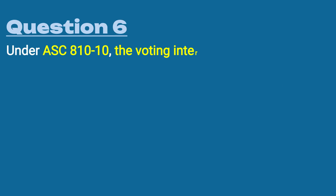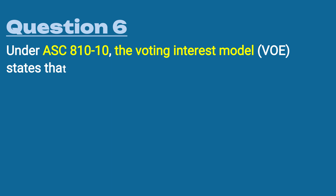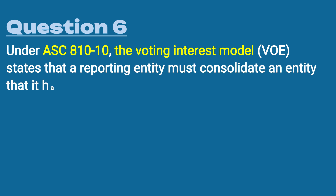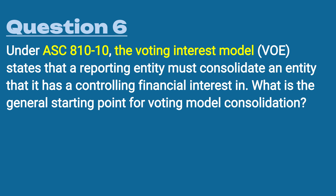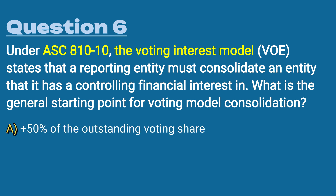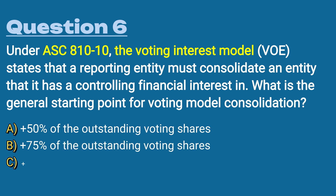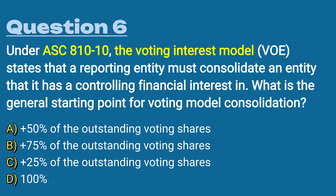Question number six: under ASC 810-10, the voting interest model states that a reporting entity must consolidate an entity that it has a controlling financial interest in. What is the general starting point for voting model consolidation? A) over 50% of the outstanding voting shares, B) over 75%, C) over 25%, or D) it's 100% owned.